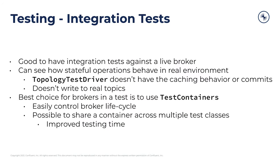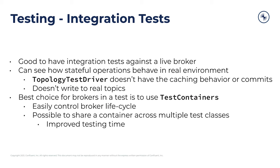Another reason the topology test driver does not quite catch every single thing you would want in an integration test is that it doesn't really test the full caching behavior and other behavior that stateful operations might have. So instead of caching, it will output every single record that is processed, which is not the same way that Kafka Streams itself will process things, unless of course you have set the cache and commit interval to zero. It also doesn't write to real topics, so you might want to make sure that you are writing to the correct topic, whether that be something dynamically determined at runtime or an actual topic that you will read from later.